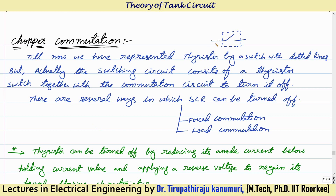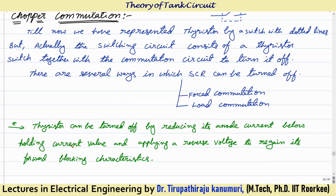Till now we have discussed that in the chopper, we have represented a switch in this form, represented by a switch with dots around it. Why are we representing by these dots, and what does this block indicate? If you are taking a thyristor, turning on the thyristor is easy, but if you want to turn off the thyristor, what is the procedure to turn it off?